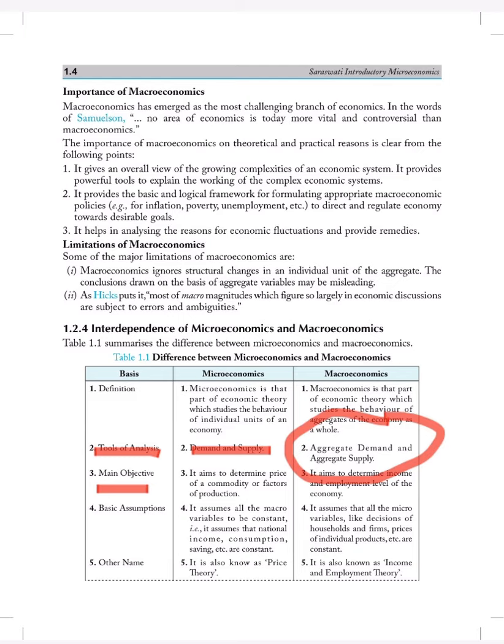Then main objective. It aims to determine the price of the commodity or factors of production. And in macroeconomics it aims to determine income and employment level of the economy.